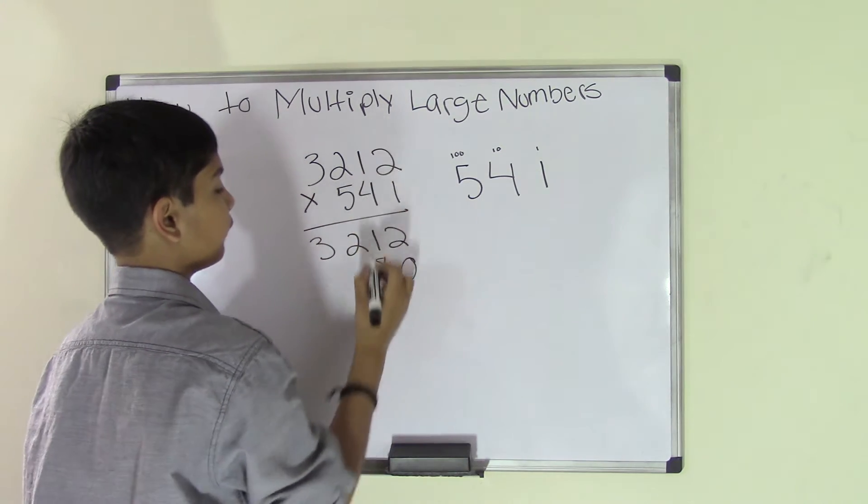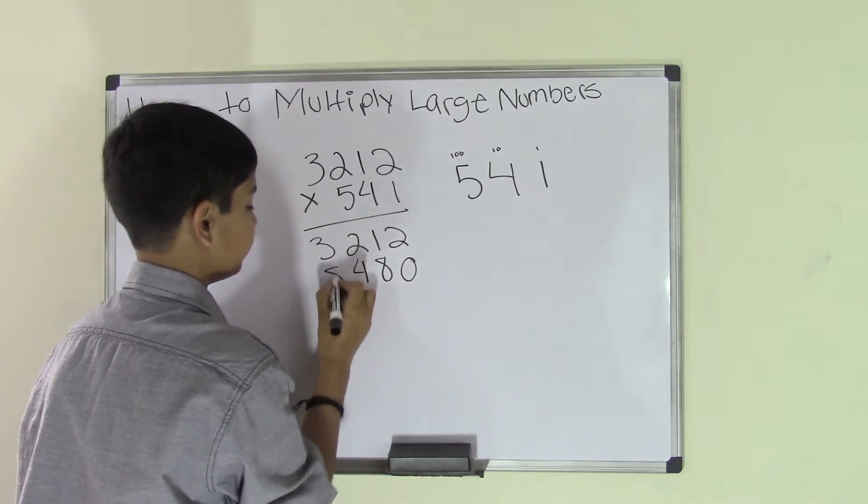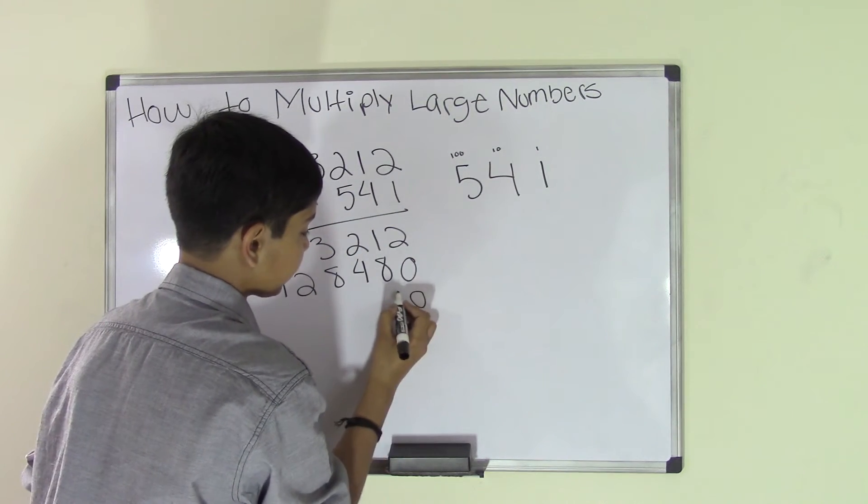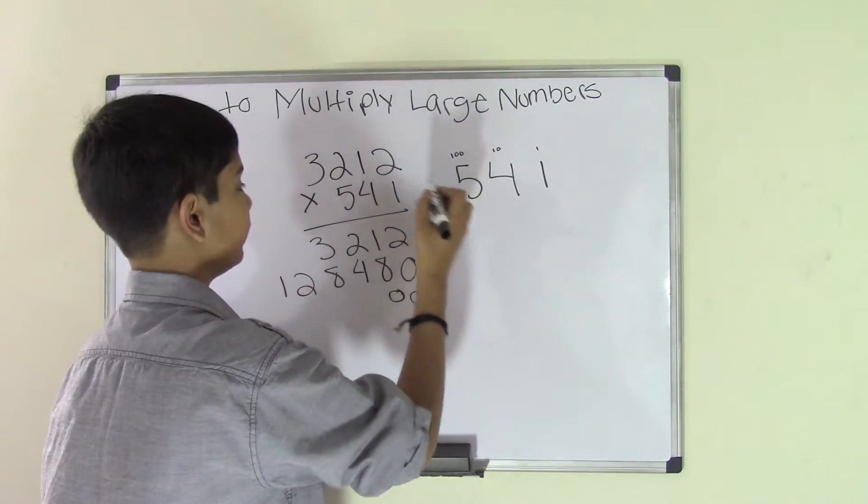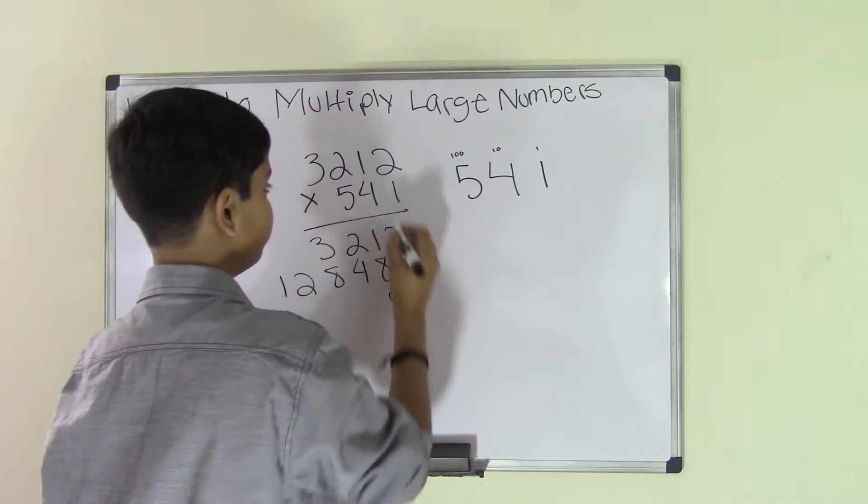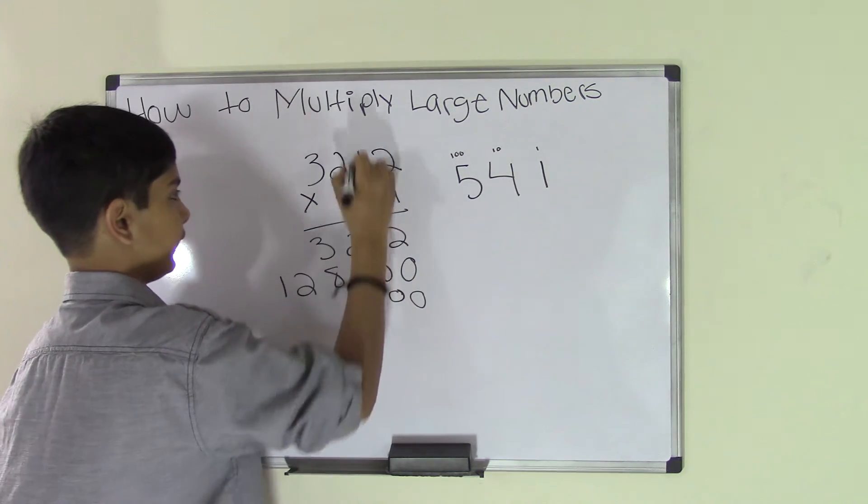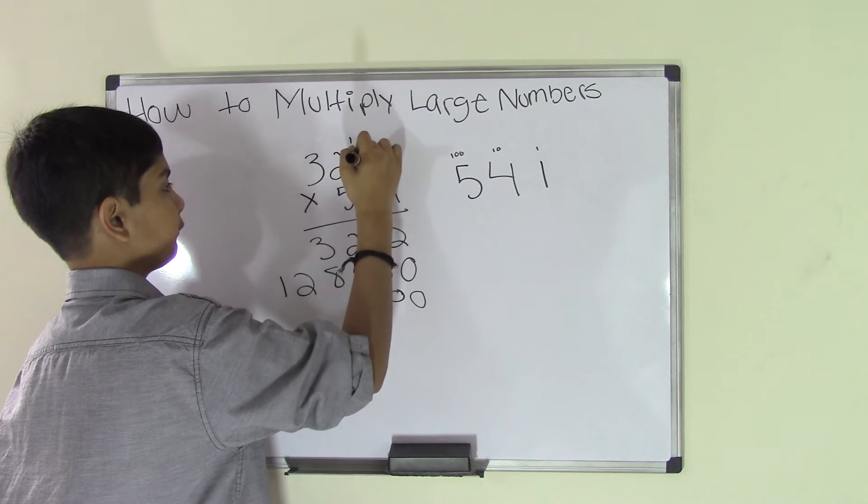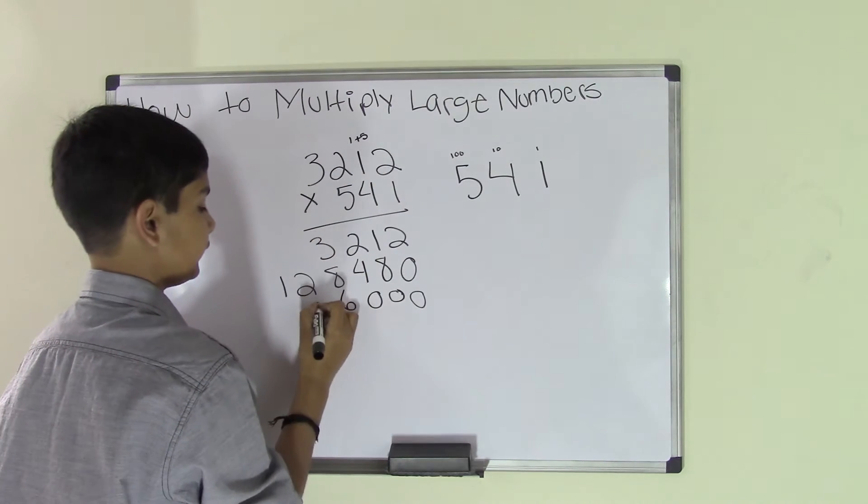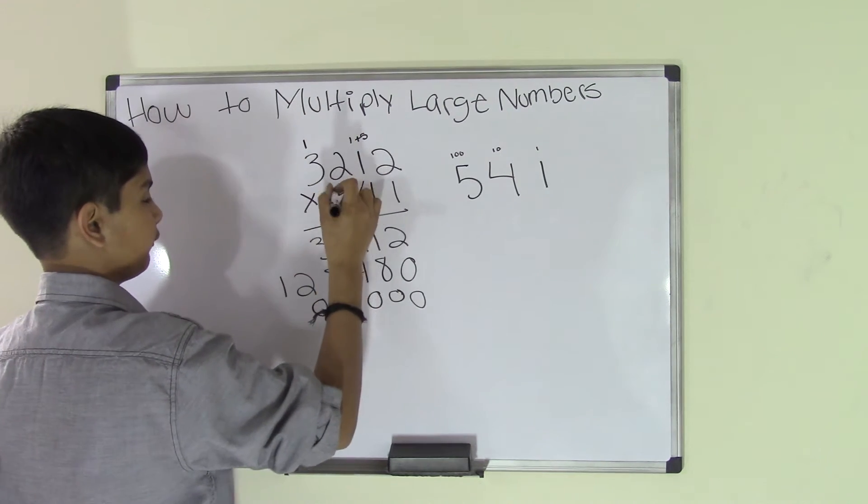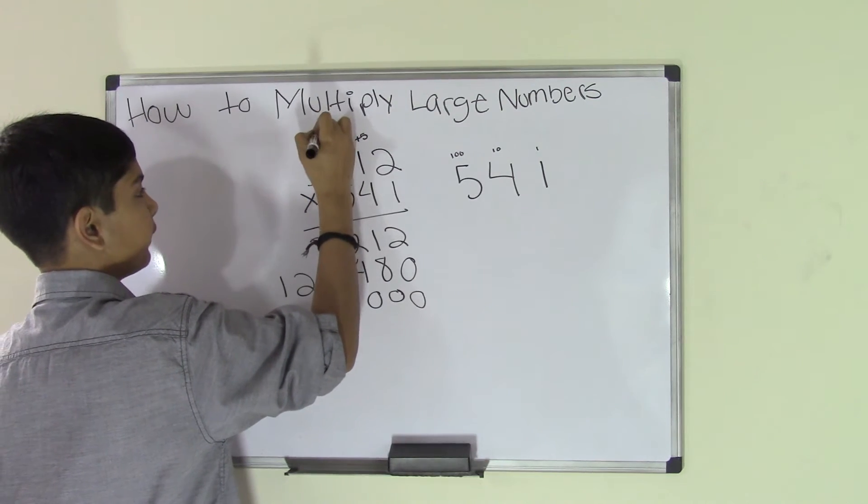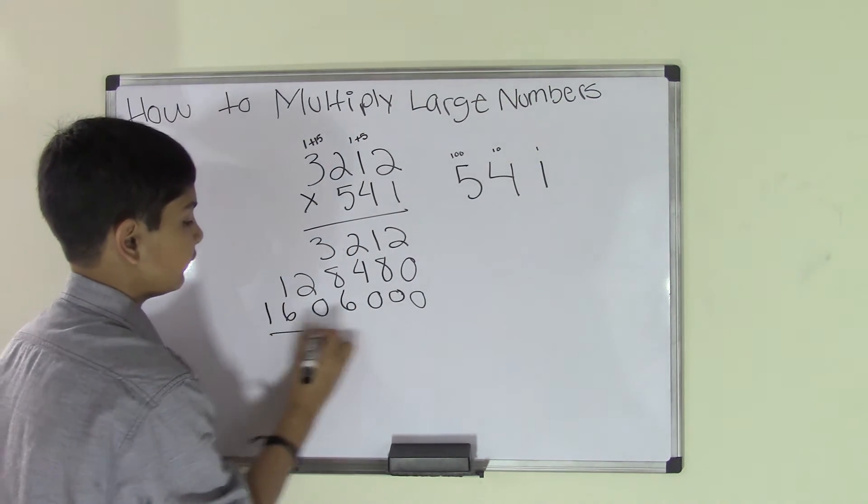Add two zeros this time because 5 is in the hundreds and a hundred has two zeros in front of it. So we do 5 times 2 is 10, add that 1 over here. 5 times 1 is 5, plus that 1 is 6. 5 times 2 is 10 again, add that 1 over here and bring that 1 over here. And 5 times 3 is 15, plus that 1 makes 16.